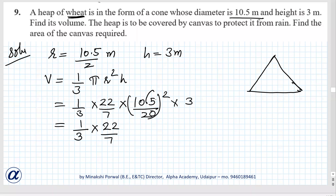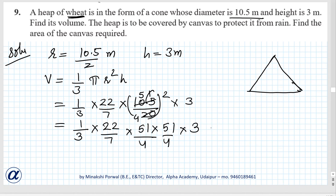If we cut by 5 it will be 51; if we cut by 5 it is 4. So it becomes 51 times 51 divided by 4 times 4, times 3. When you solve this, you will get 86.625 cubic meters.